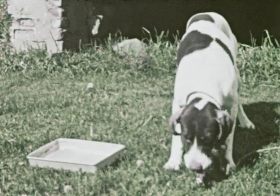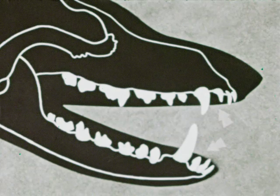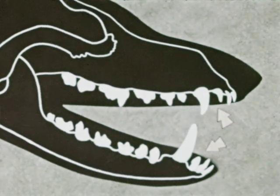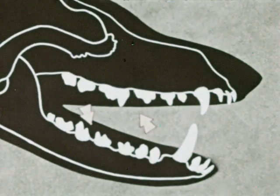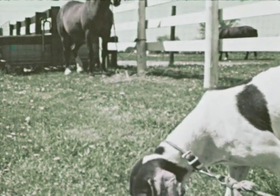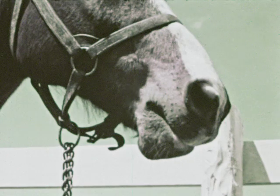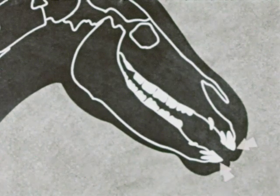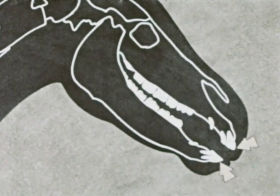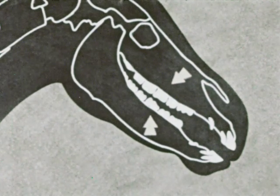Dogs are meat-eating animals — their teeth are adapted to tearing and chewing meat. A diagram of a dog's teeth shows the sharp pointed front teeth suited to tearing meat, and back teeth used to grind meat into pieces small enough to swallow. However, many large four-footed animals like the horse are plant eaters. A horse has sharp front teeth used to bite off grass, and broad, flat back teeth well suited to grinding grass and other plants before they are swallowed.